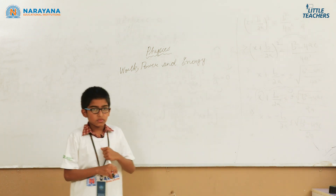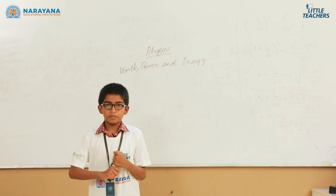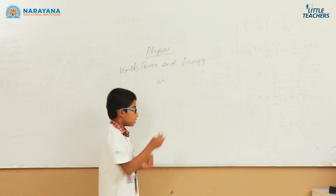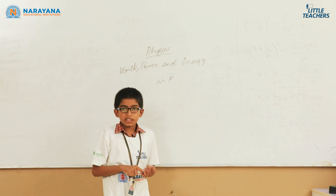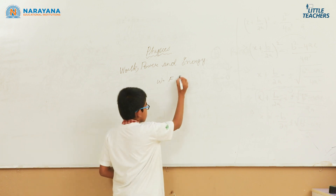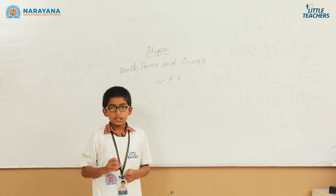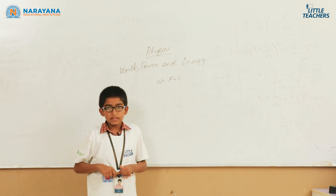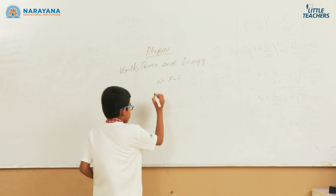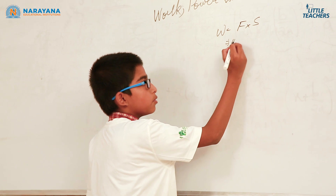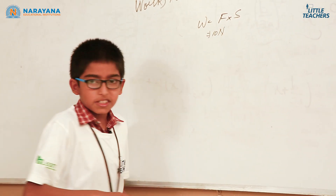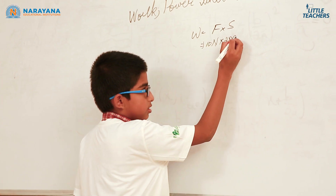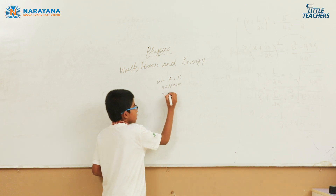Work is said to be done when there is an object with force applied on it, and when the force has been applied, the displacement must change. To calculate work, we multiply force by displacement. If the force applied was 10 Newtons and the displacement changed was 2 meters, then the work done is 20 Joules.